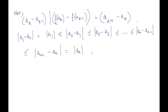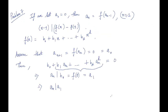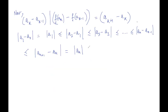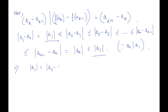Remember we took aₙ₊₁ = 0. So |aₙ₊₁ − aₙ| = |aₙ|. Also, aₙ divides a1, so this is ≤ |a1|, since aₙ divides a1. So now we see that we started with |a1| and we landed back at |a1|, which implies that |a1| = |a2 − a1| = ··· = |aₙ − aₙ₋₁| = |aₙ|.